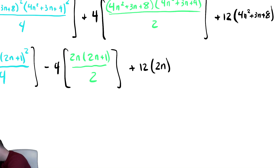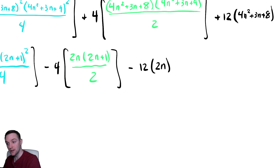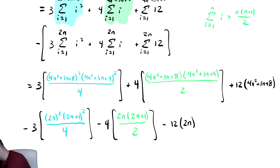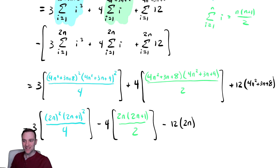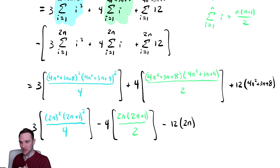Note: this should be minus 12 times 2n, because we need to distribute the negative sign out front into all of the summations. And now that horrible mess is a closed form expression for that summation.